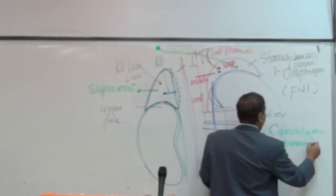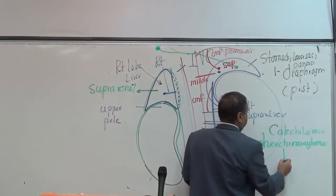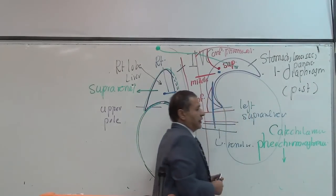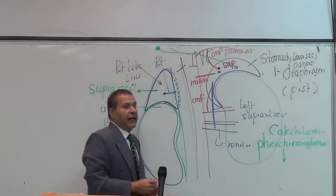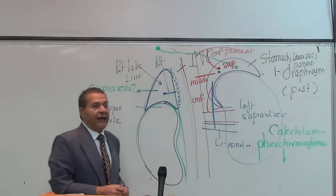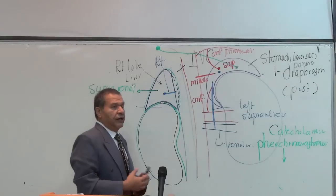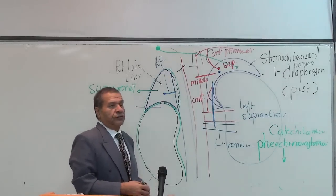Pheochromocytoma causes secretion of catecholamines. Because of this, the patient gets attacks of increased blood pressure and increased arrhythmia.